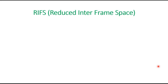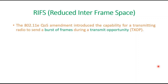The last IFS type is RIFS — Reduced Interframe Space. The 802.11e amendment introduced the capability for a transmitting radio to send a burst of frames during a transmit opportunity, called TXOP. During the frame burst, SIFS was used between each frame to ensure no other radios transmitted during the burst.